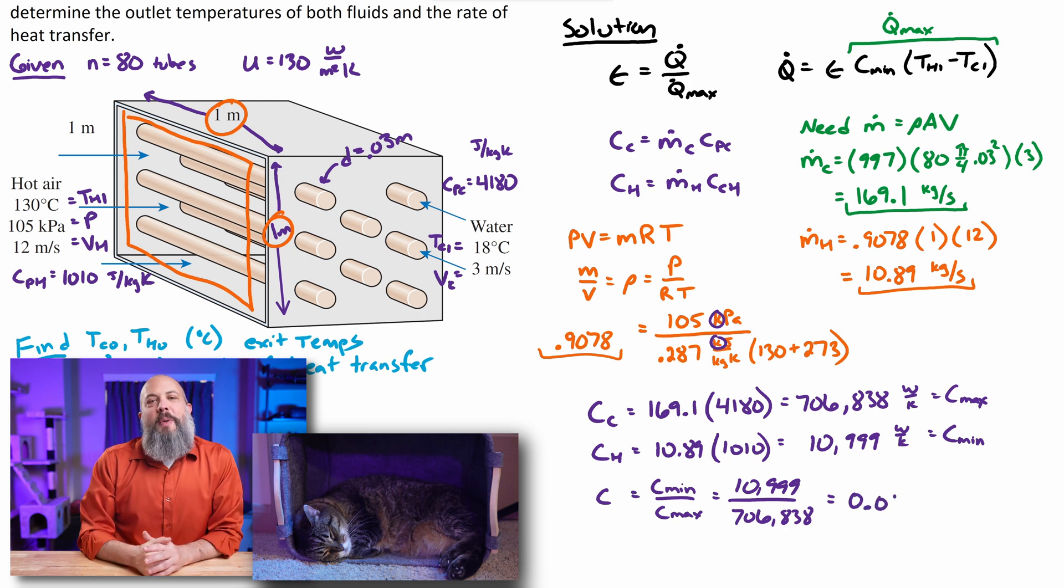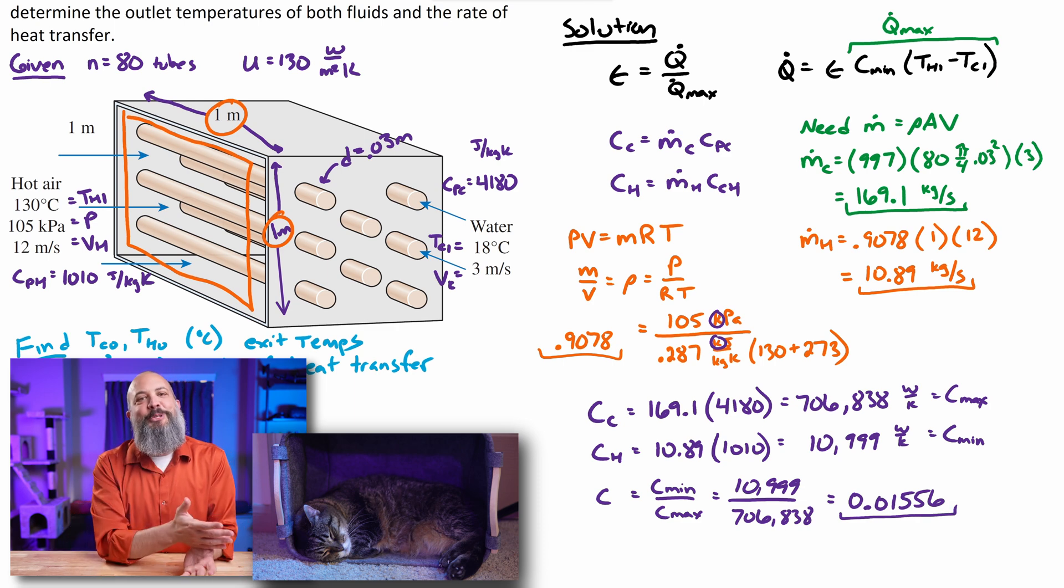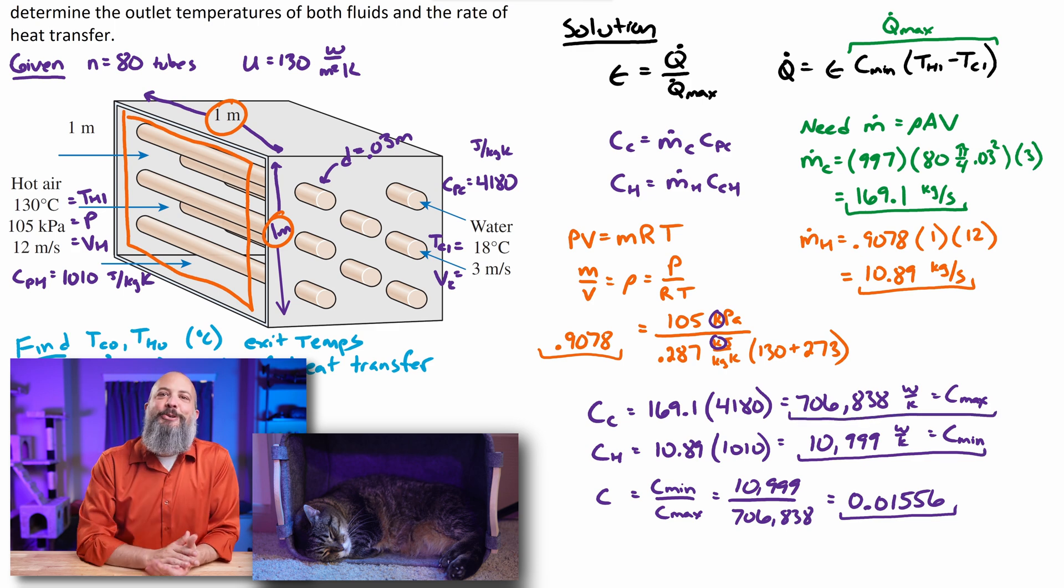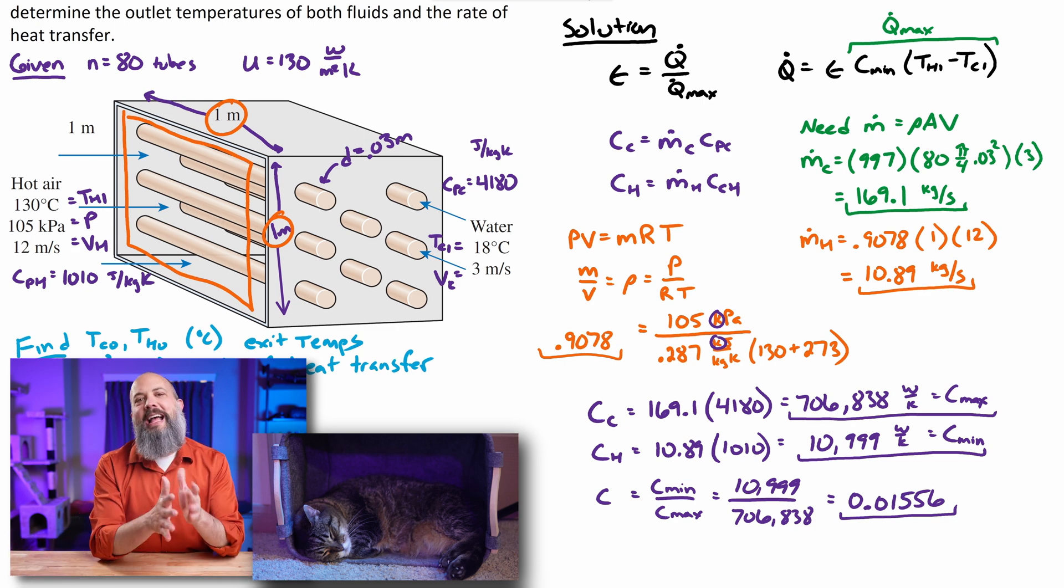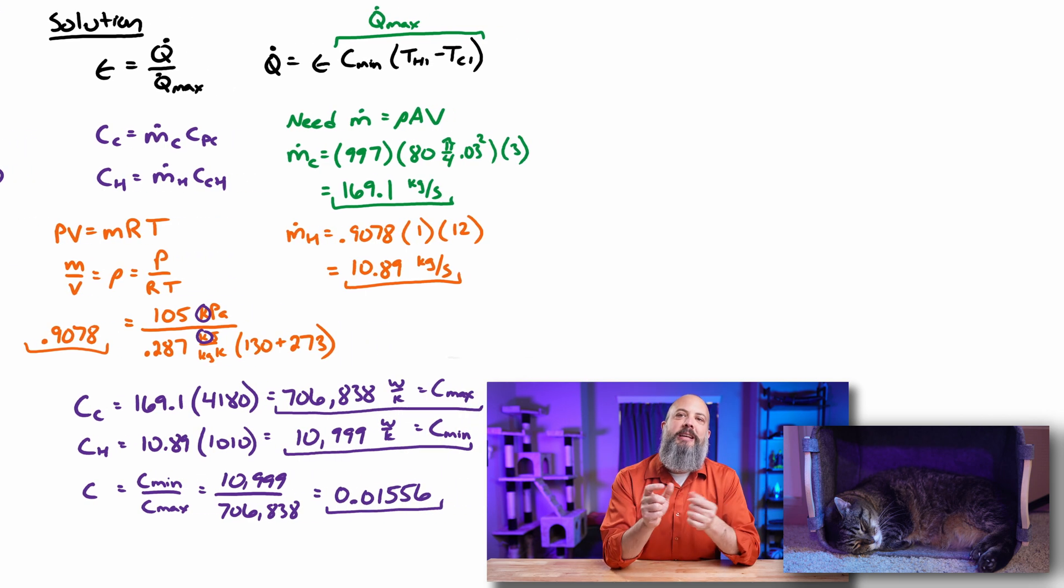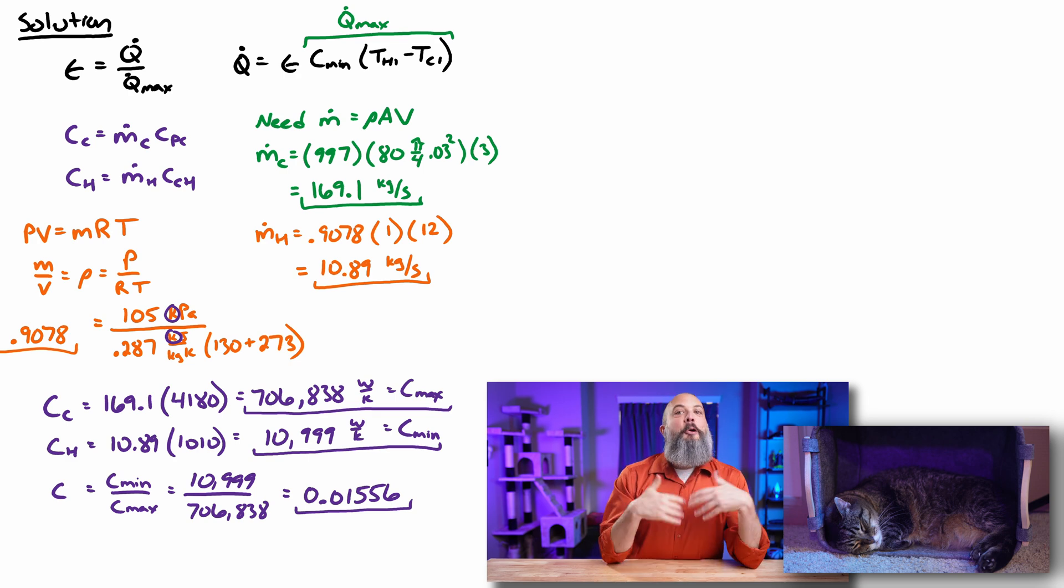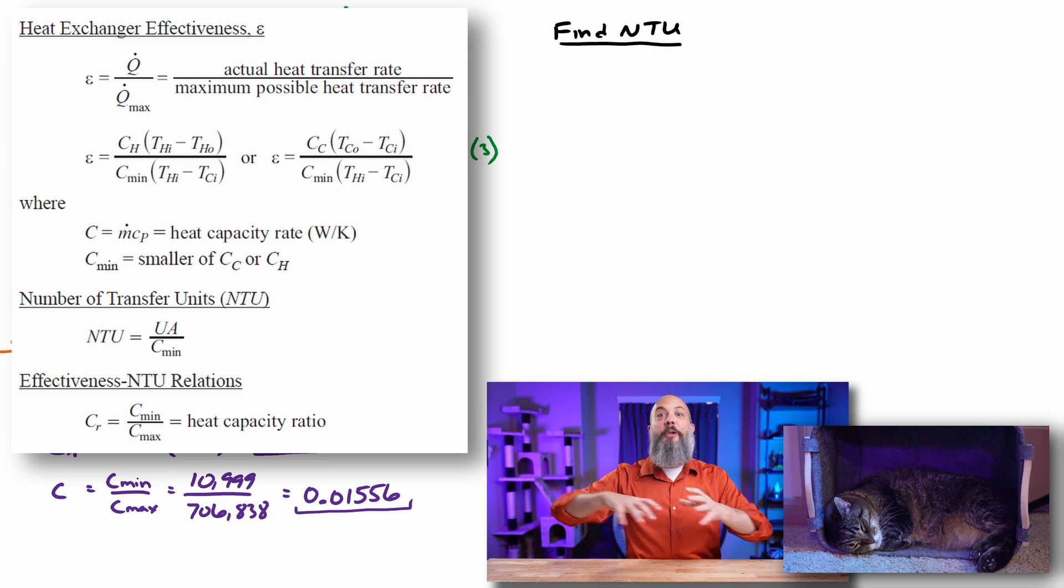And so it might have made more sense if I had actually put the effectiveness equation up on the screen first to show you why I am finding these capital C heat capacity ratio and NTU values that I'm going to find next. But essentially, you're going to have to find these every single time. Every NTU effectiveness problem, you're going to have to find capital C, you're going to have to find NTU. It is the number of transfer units, it's a ratio between UA and M dot CP. And a larger value for NTU means that we are closer to this maximum possible amount of heat transfer.